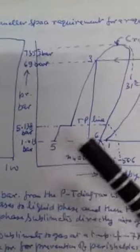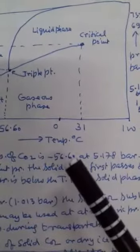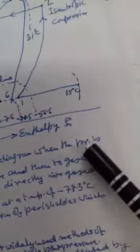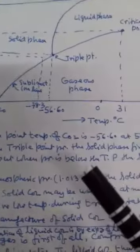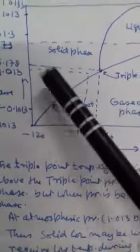The triple point temperature of CO2 is minus 56.60 degrees Celsius at 5.178 bar from the pressure-temperature diagram. When pressure is above the triple point pressure, the solid phase first passes to liquid phase and then to gaseous phase. But when pressure is below the triple point, the solid phase sublimates directly into gaseous phase. See, this is the triple point. If we go above, it will change from solid to liquid, then liquid to gas. But the triple point is at pressure 5.178, and below that is atmospheric pressure.